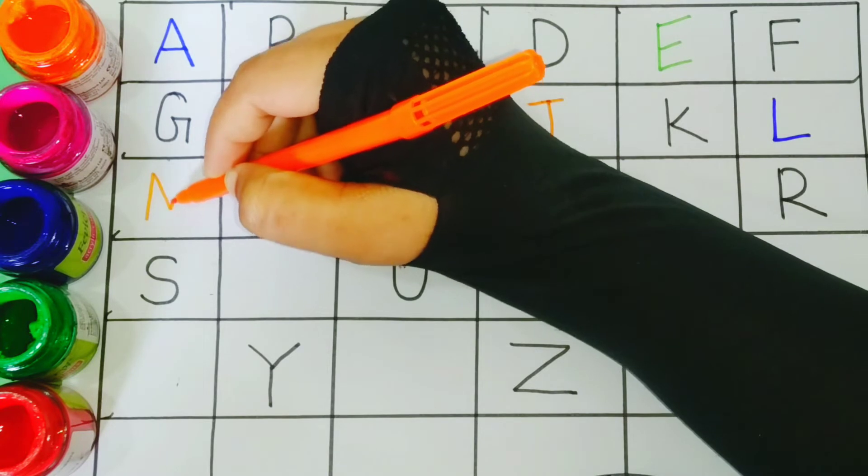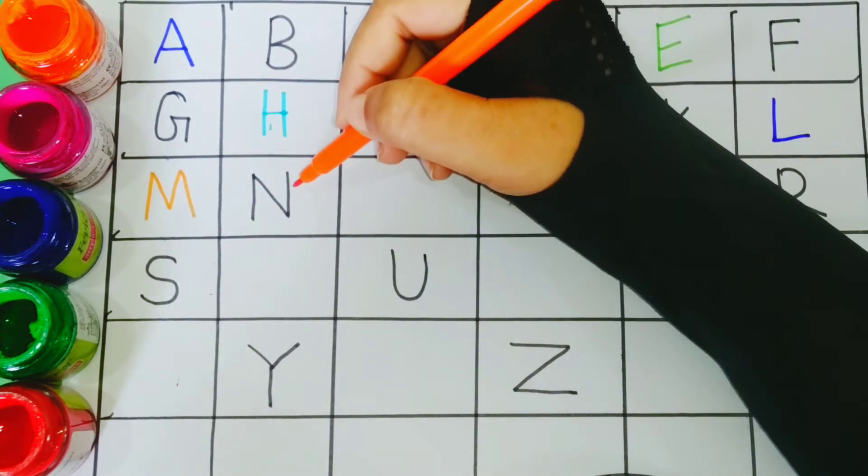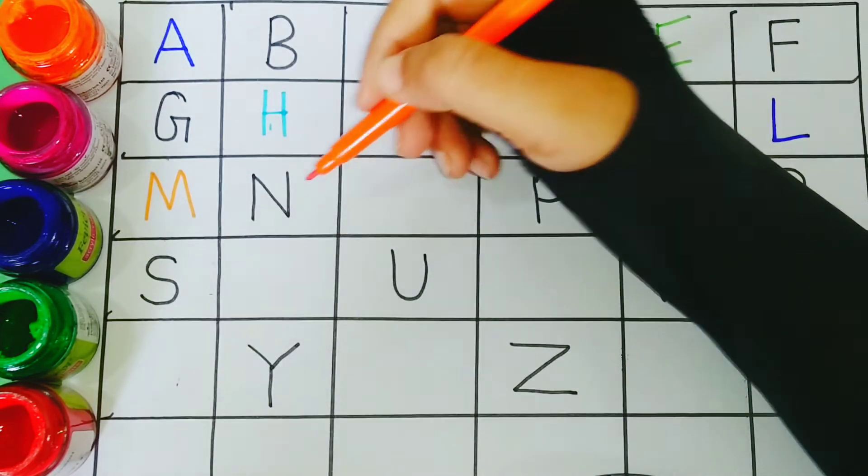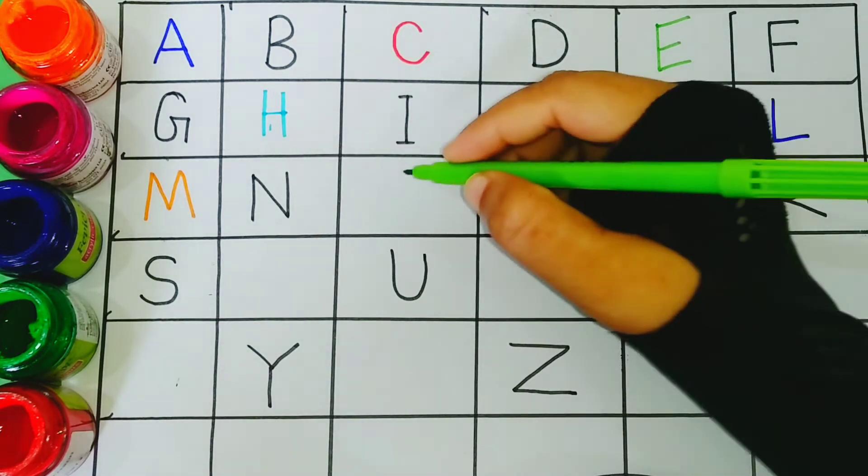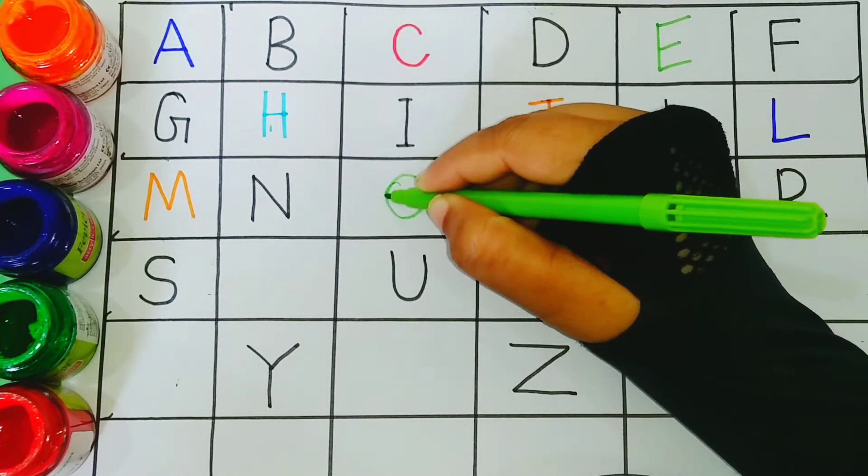M. M for mango. N. N for nest. O. O for orange.